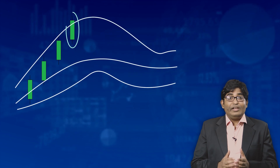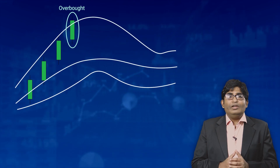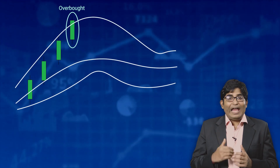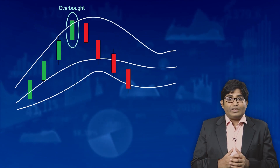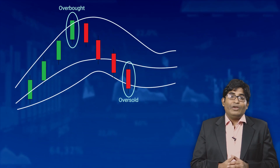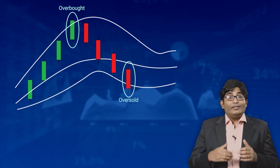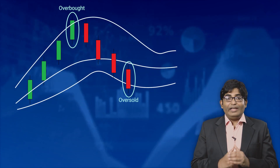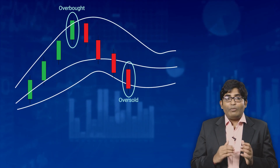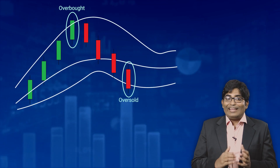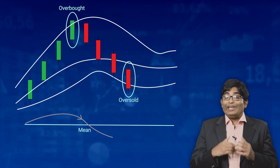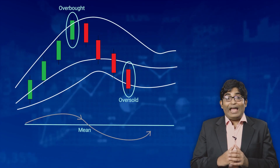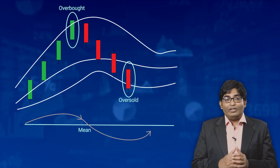As a thumb rule, prices are considered over-extended on the upside or overbought when they touch the upper band. They are considered over-extended on the downside or oversold when they touch the lower band. The statistical concept behind the technical terms overbought and oversold is that as prices depart from the average, we should expect them to move back towards the mean.